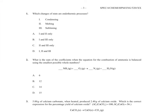Question 1 asks which changes of state are endothermic processes. Remember, endothermic is when bonds are broken; exothermic processes are when bonds are made. Condensing is going from a gas to a liquid — in a gas there are not many bonds, so you are making more bonds going into a liquid, making it exothermic. Melting is solid to liquid, reducing the number of bonds. Subliming is solid to gas, again reducing the number of bonds. Both melting and subliming are endothermic processes, giving us answer C.